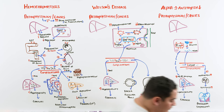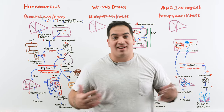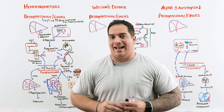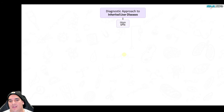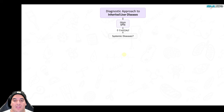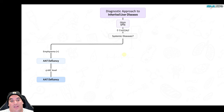We've now covered the pathophysiology, causes, and complications of all three. Now let's discuss diagnostics. These patients often present with elevated LFTs — increased AST and ALT suggesting hepatocellular injury — in combination with other systemic diseases. If a patient has emphysema and is young, think alpha-1 antitrypsin deficiency. Check an alpha-1 antitrypsin level — if it's low, that gives confident suspicion. A biopsy is needed to truly confirm the diagnosis.